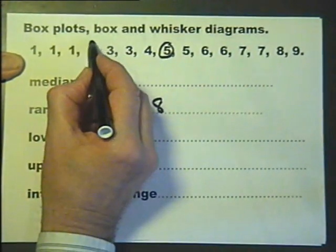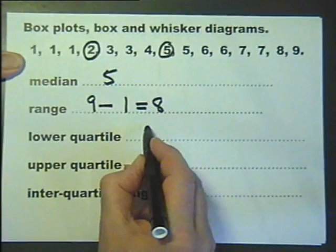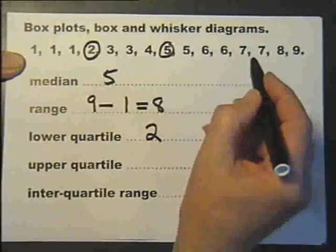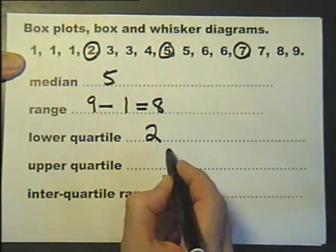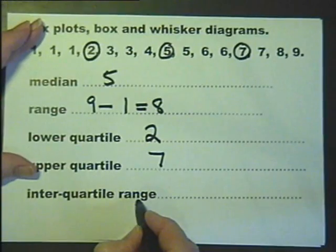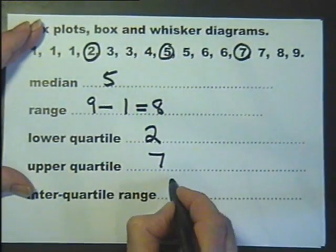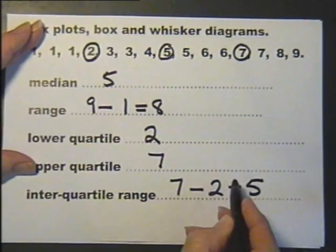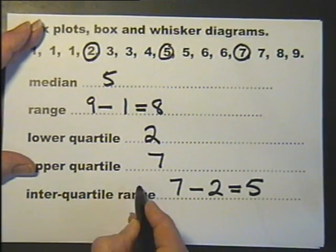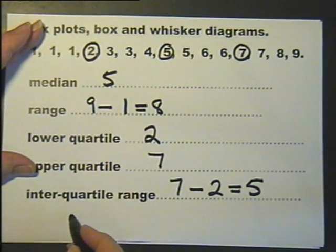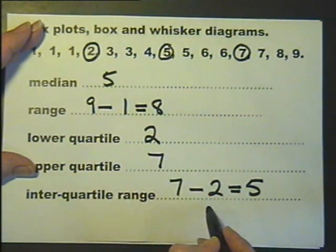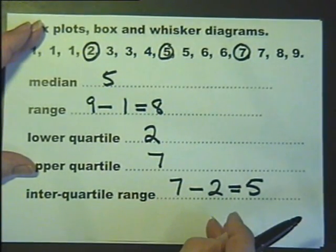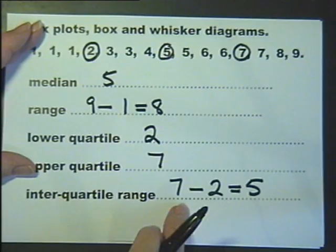Lower quartile is the first quarter mark. There's the median as the second quarter mark, or halfway mark. And then the third quarter mark is the upper quartile. And then the interquartile range is the upper quartile minus the lower quartile. By the way, in an exam, if you're asked to answer a question on the interquartile range, show your working out, no matter how simple it is. If things go wrong, you can still get marks.